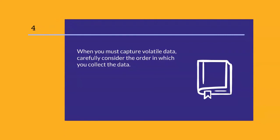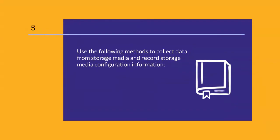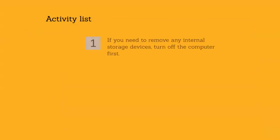When you must capture volatile data, carefully consider the order in which you collect the data, as volatile evidence can be easily destroyed. Information such as running processes, data loaded into memory, routing tables, and temporary files can be lost forever when a computer is shut down. Use the following methods to collect data from storage media. If you need to remove any internal storage devices, turn off the computer first. However, before you turn off the computer, verify that all volatile data has been captured whenever possible.